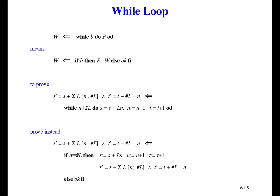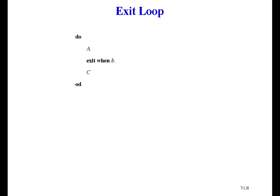Some languages have a way to jump out of the middle of a loop. In C and Java it's called break. In other languages it's called exit. This is supposed to be a loop with a conditional exit in the middle. Since it's a loop, we don't say what it's equal to. We say what this refinement means, where L is an implementable specification.